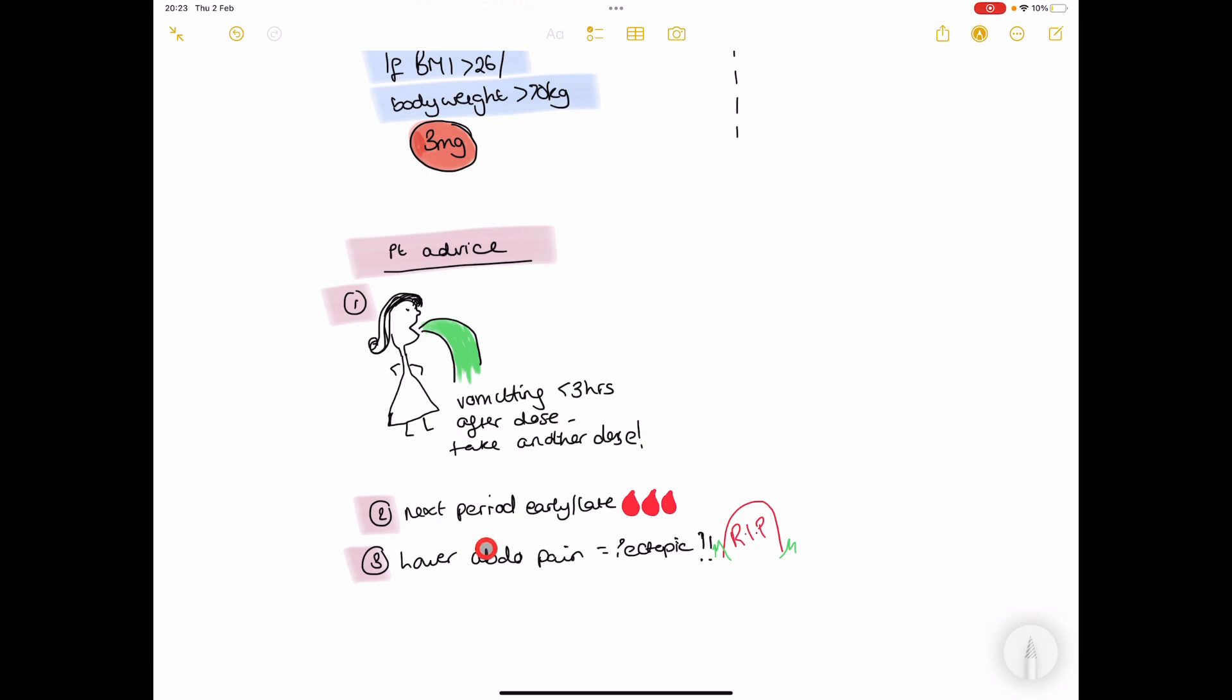Warn them that the next period might be a little earlier, a little later, maybe a little different. However, also warn them to look out for any lower abdominal pain, anything out of the ordinary, to seek medical attention because it could be an ectopic pregnancy.